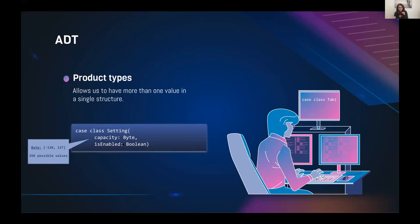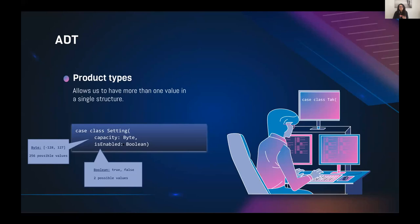'Capacity' has 256 possible values from its type, and 'isEnabled' has two possible values. This is called a product type because to know how many possible values the Setting type can have, we multiply the possible values for each property of the case class.